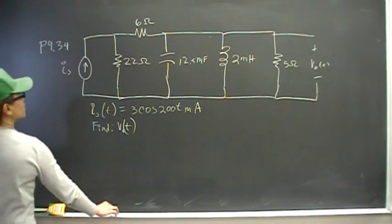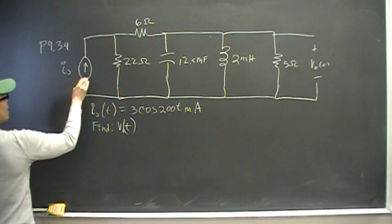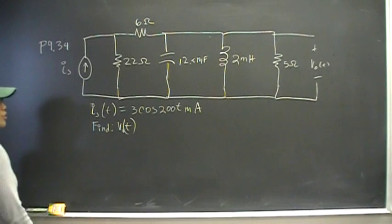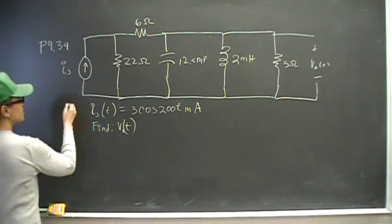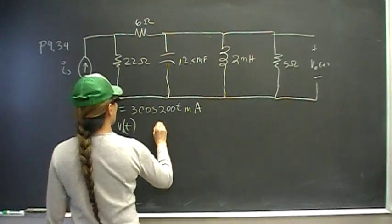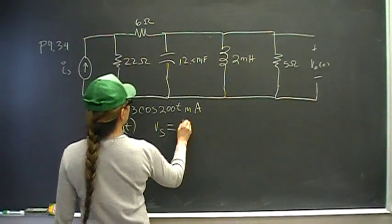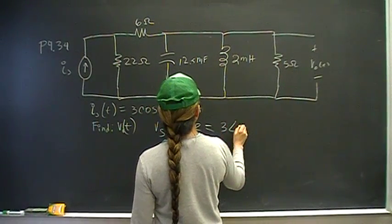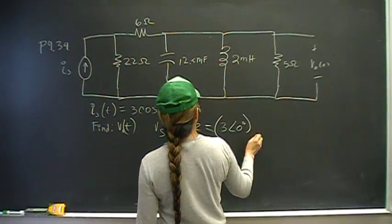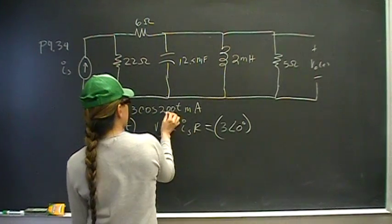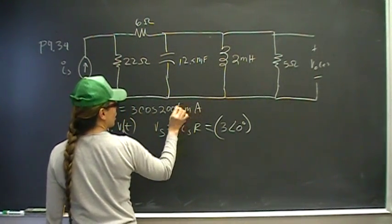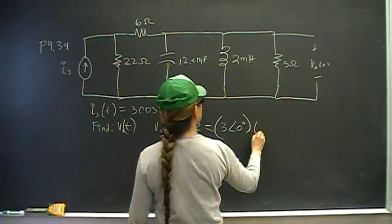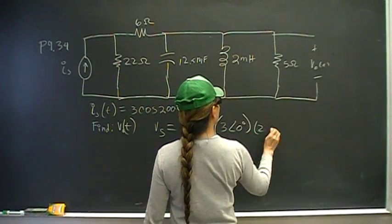We have a current in parallel with a resistance, so we know that's going to be a voltage in series with the same resistance. So V_S is going to be I_S times R, and that's going to be 3 angle 0. Notice this is the omega - the angle is not written here but it's implied to be zero.